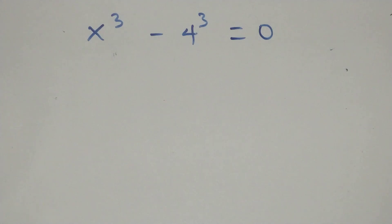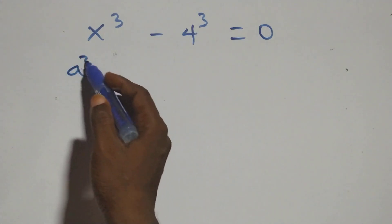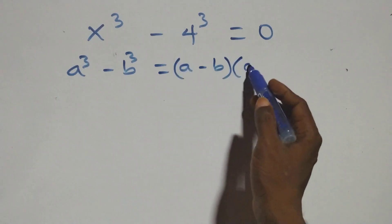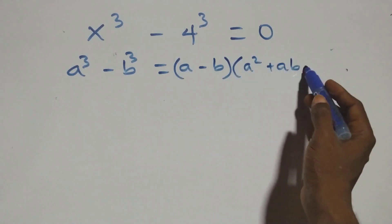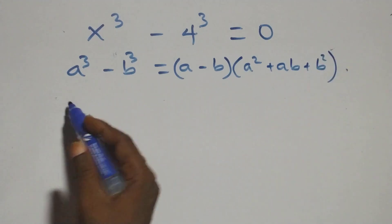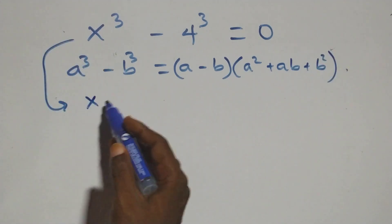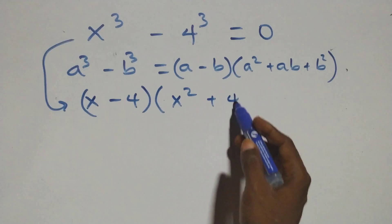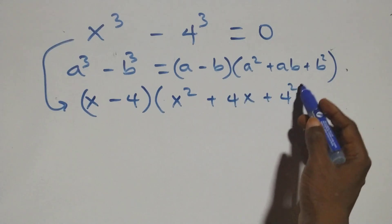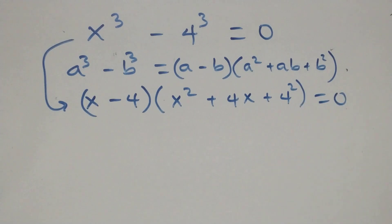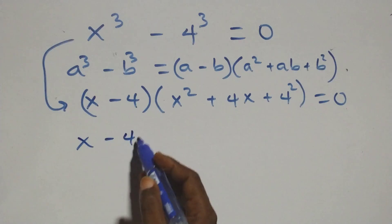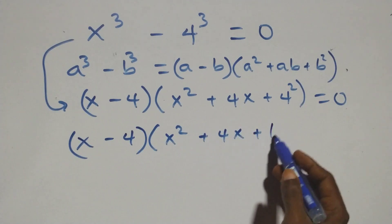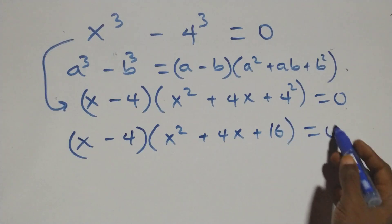Solving from the second case, x raised to power 3 minus 4 raised to power 3 equals to 0. This also follows the identity a raised to power 3 minus b raised to power 3, which is the same thing as a minus b into open bracket a squared plus ab plus b squared. So we have x minus 4 into open bracket x squared plus 4x plus 4 squared plus 16, close bracket equals to 0.